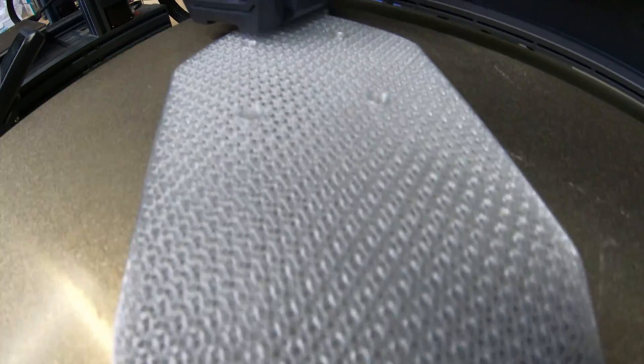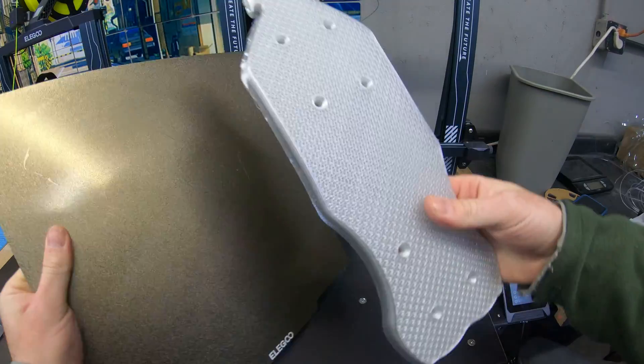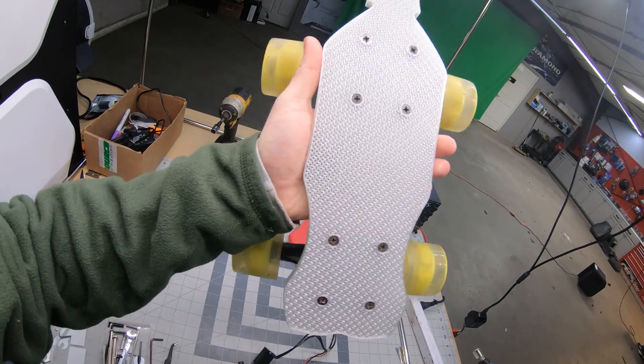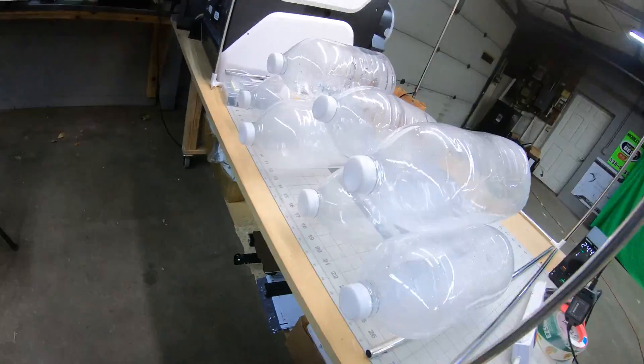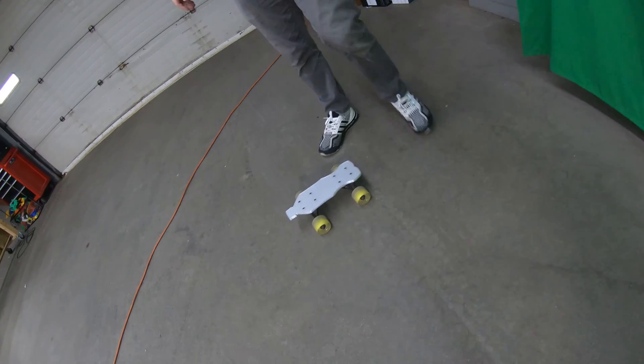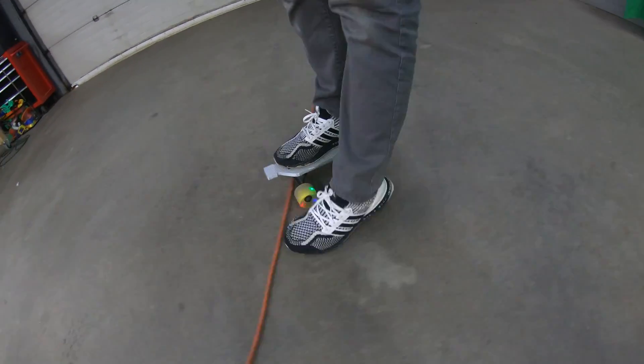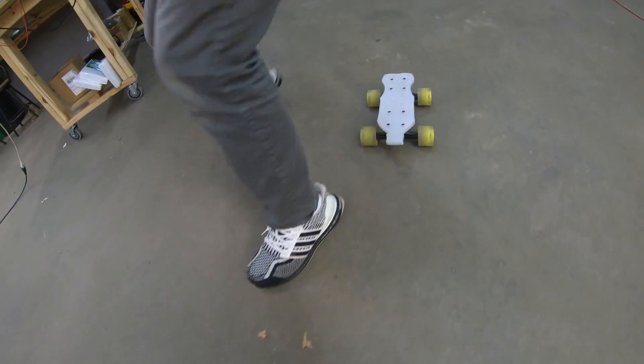So with that, you should be ready to start making your own filament. Here's something that I made with recycled filament. It's a really small skateboard. And I made it using a bunch of gallon water jugs. As you can see, it looks more like a roller skate than a skateboard. But yeah, anyway, thank you for watching the video.